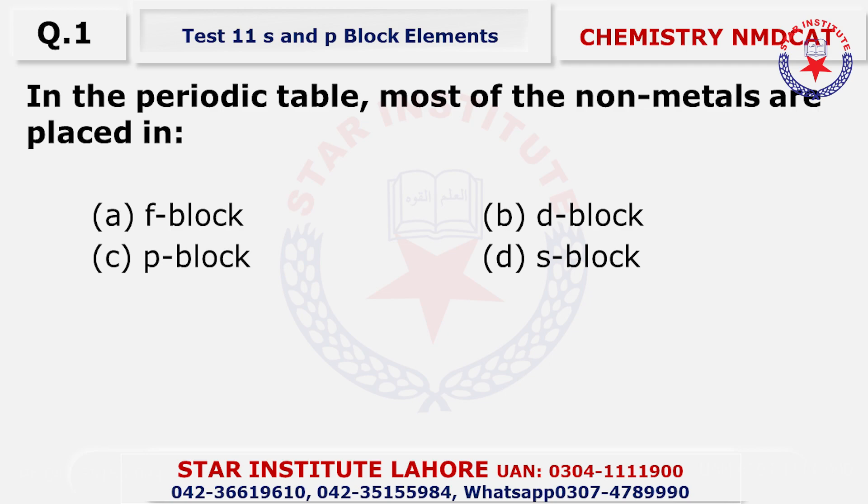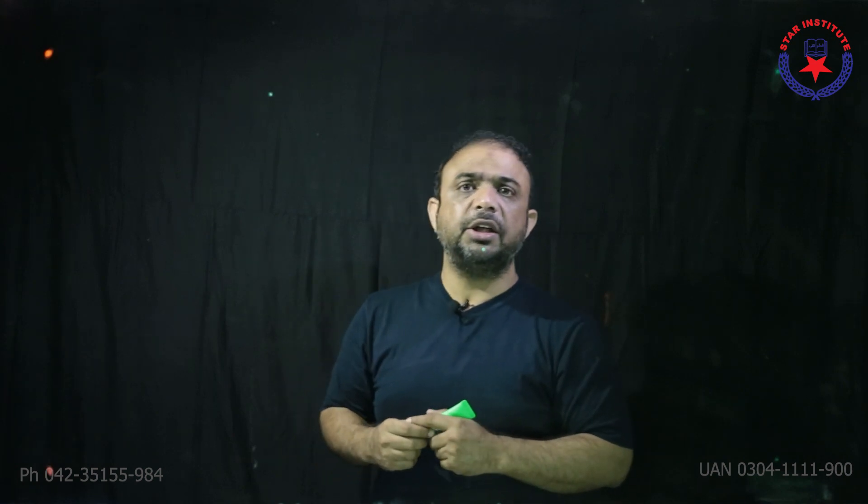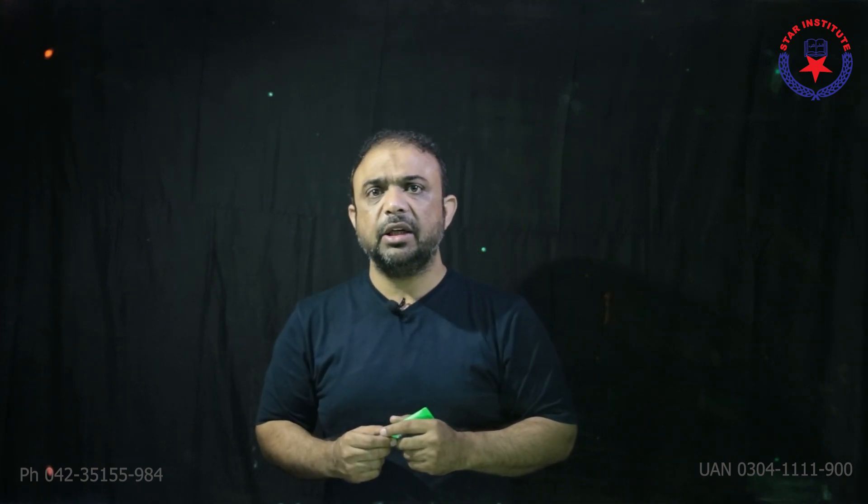In the periodic table, most of the non-metals are placed — obviously, if you talk about non-metals, you have the periodic table. Remember, left and right will be from the observer's point of view. So the correct option is C for this case. Question number 1 is C.